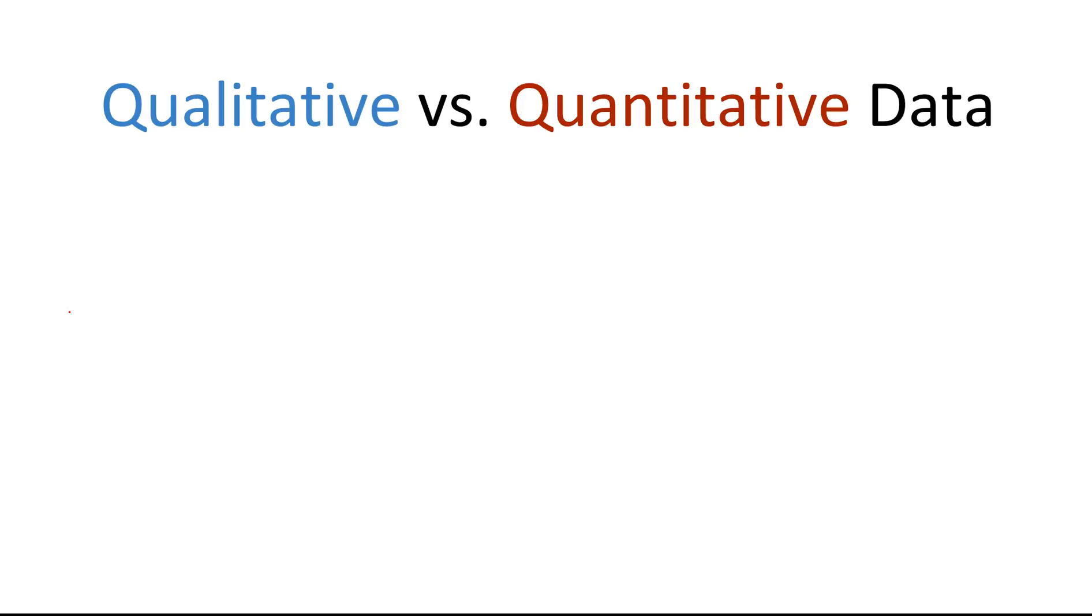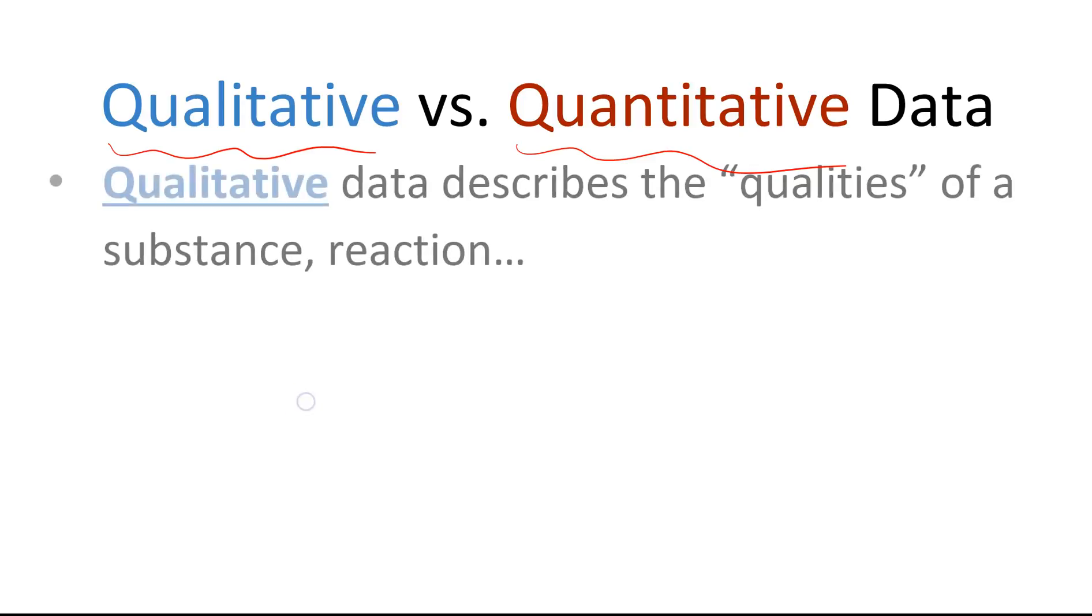So first kind of learning target here is we're going to look at being able to differentiate between qualitative and quantitative data. They're both types of data, both good data, or they can be good or bad. But there's a key difference, and it's important to differentiate because they kind of have different purposes. So first of all, qualitative data. We're looking at the qual prefix there, the quality of something. When we look at qualitative data, we're talking about maybe the color or what it looks like or smells like or sounds like or feels like. Those are all important information about something, but they are not numerical data that have units attached to them.